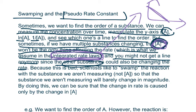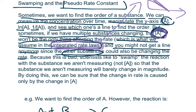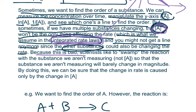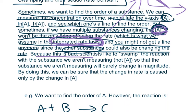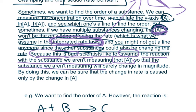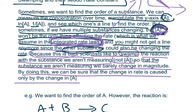So how do we combat this? How do we make it so that we can use the integrated rate laws once again to make lines? Scientists know that it is bad for other substances other than A to be changing, since it will not follow the integrated rate laws from 9.2 anymore. So because this is bad, scientists like to swamp the reaction with a substance we aren't measuring, so that the substance we aren't measuring will barely change in magnitude. By doing this, we can be sure that the change in rate is primarily caused by the change in A.